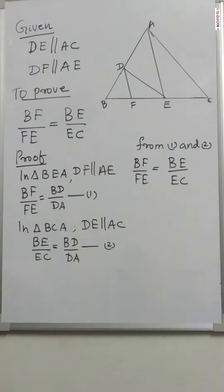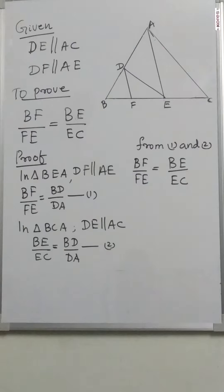In the figure, DE is parallel to AC and DF is parallel to AE. In the given figure, prove that BF by FE is equal to BE by EC.